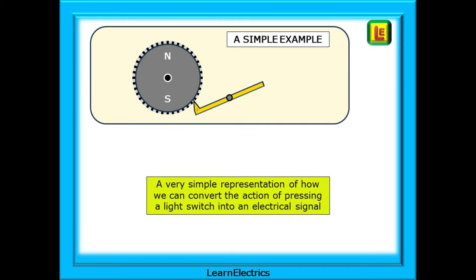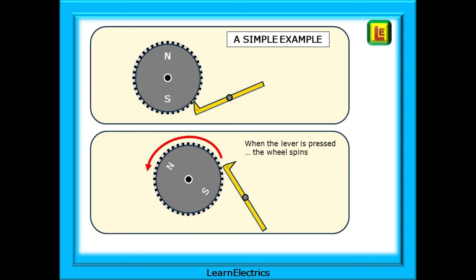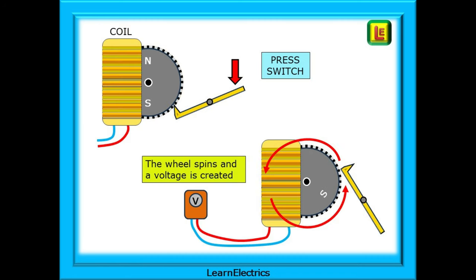A very simple representation of how we can convert the action of pressing a light switch into an electrical signal might go as follows. Imagine a magnetic wheel inside the kinetic switch assembly. If the lever is moved, the wheel will move. North at the top will become north at the bottom and south at the top. If we can spin the wheel fast enough for a short time, we will have north-south, north-south, north-south as it rotates. And we can now do something with this.